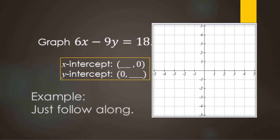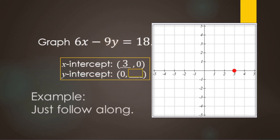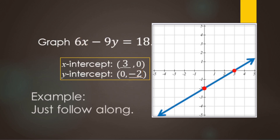Just follow along with this example to see how fast this actually takes. To find the X-intercept, divide by 6: 18 divided by 6 makes 3. For the Y-intercept, divide by negative 9 — the number in front of the Y: 18 divided by negative 9 is negative 2. Now draw the line. This method is not meant to take much time at all.